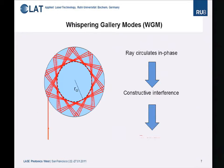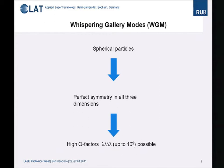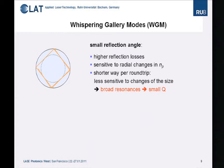Transferring this concept to optics, we see rays circulating in phase; we observe constructive interference and resonance behavior. Spherical particles are quite suitable because they have perfect symmetry in all three dimensions. Theoretically, people have observed high quality factors of these resonators up to 10^9. However, you have to think about how to transfer light into the particles — you need some interface — and realistically, Q factors up to 10^5 or 10^6 are possible, which is still quite high.